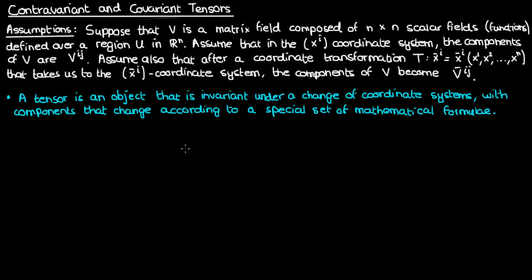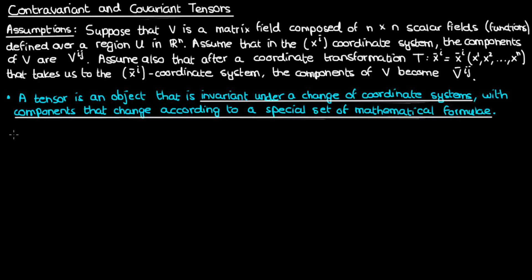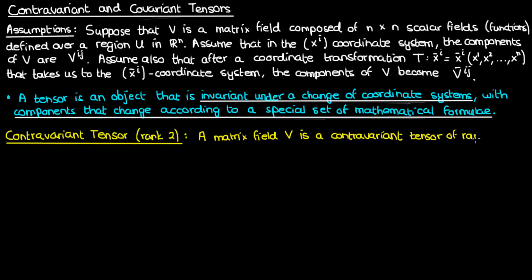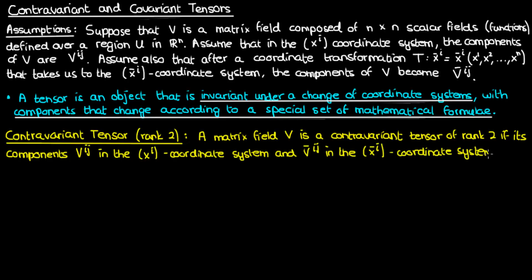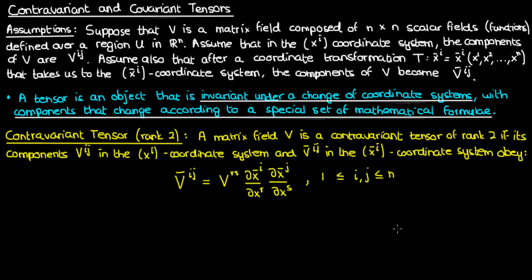To remind you of those rules: the whole of V must be invariant under a change of coordinates — the combination of the components of V and the basis vectors specifying V must be invariant. In addition, under a coordinate transformation the components of V must change according to a special set of formulae. Specifically, for the matrix field V to be a contravariant tensor of rank 2, its components V^ij and V^ij-bar must obey the following law of transformation, where R and S are dummy indices summed from 1 to n, and i and j are free indices running from 1 to n.